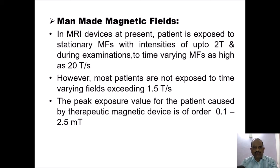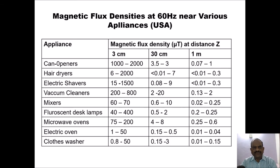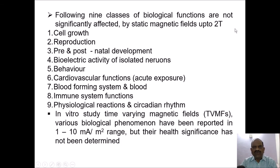The peak exposure value for patients caused by therapeutic magnetic devices is of the order of 0.1 to 2.5 Tesla per second. The following nine classes of biological functions are not significantly affected by static magnetic fields: cell growth, reproduction, pre- and post-natal development, bioelectric activity of isolated neurons, behavior, cardiovascular function even during acute exposure, blood-forming system and blood, human system functions and physiological reactions, and circadian rhythm. These nine classes are not significantly affected by static magnetic fields up to 2 Tesla.